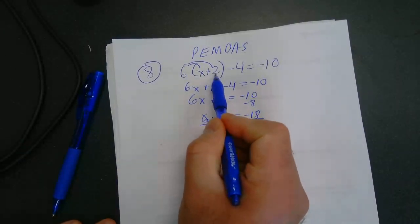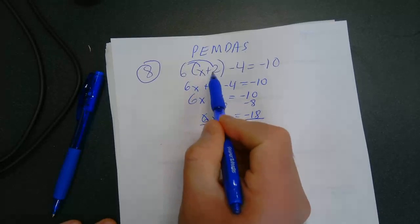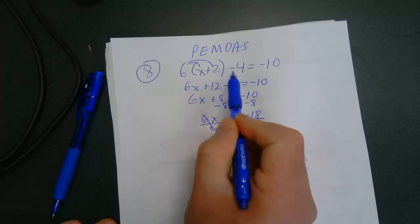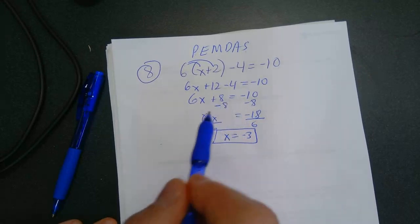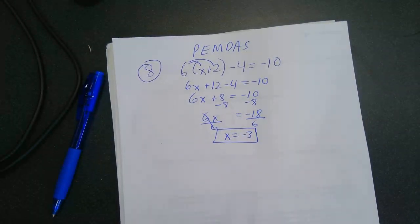Negative 3 plus 2 is a negative 1. 6 times a negative 1 is a negative 6. Negative 6 minus 4 is a negative 10. Sometimes if you get really good, you can check it that quickly to make sure you haven't made an error.